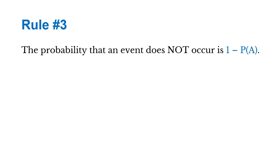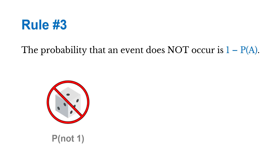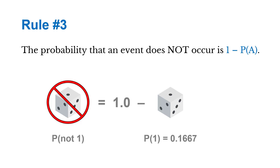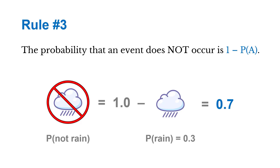As the third rule, the probability that an event does not occur is going to be one minus the probability of it actually occurring. So maybe the probability of rolling a six-sided die and not getting a one is one minus the probability of rolling a one, which is 0.1667. We could also look at it this way: the probability of it not raining is one minus the probability of rain, giving us 0.7.